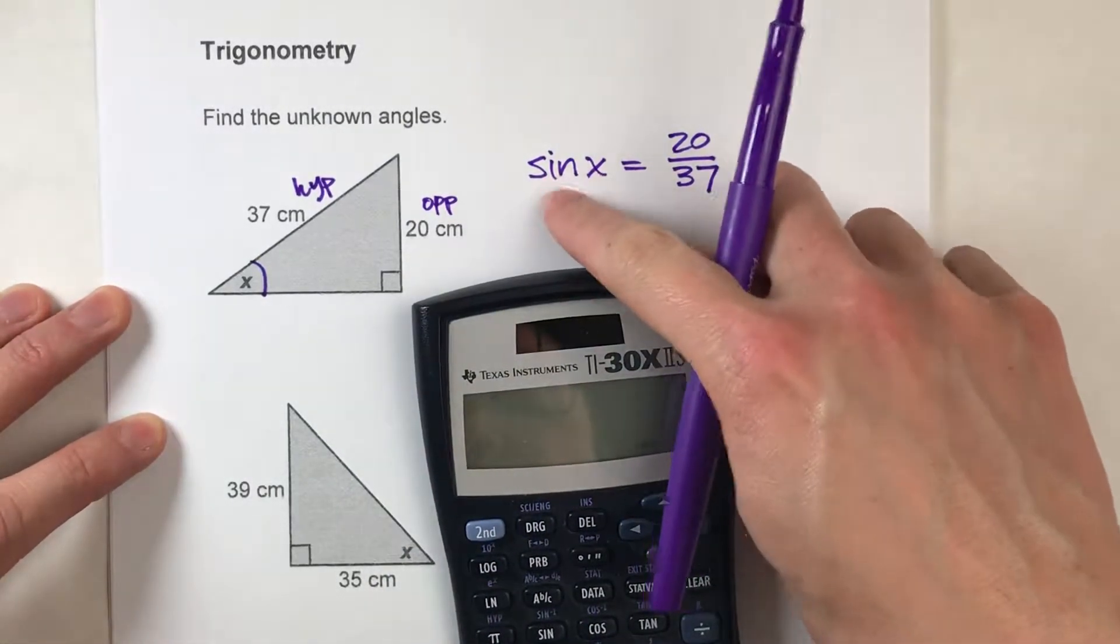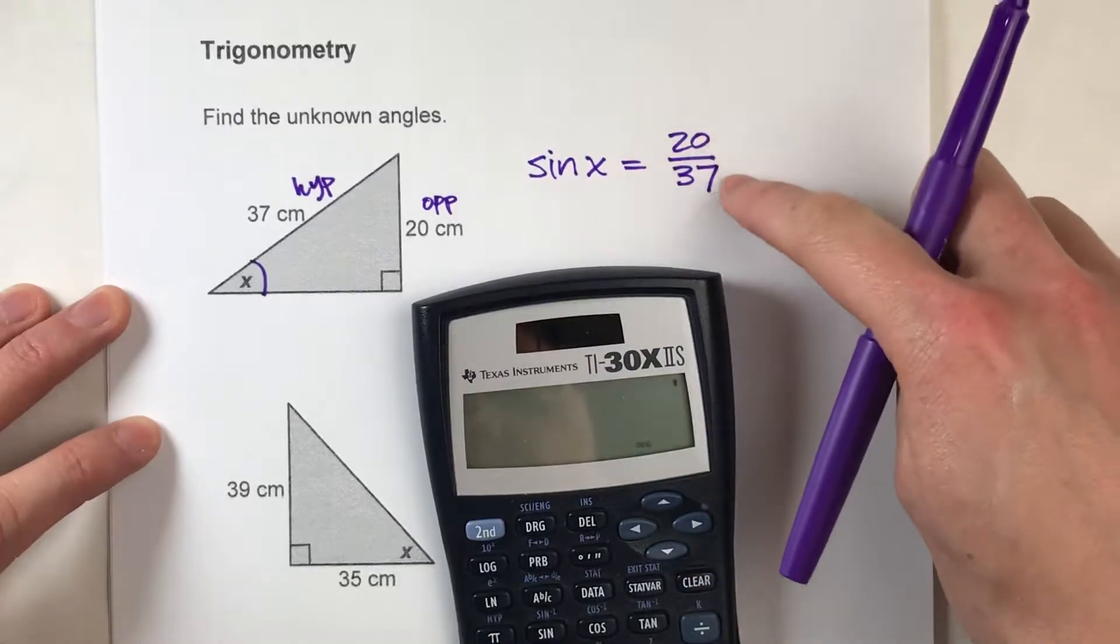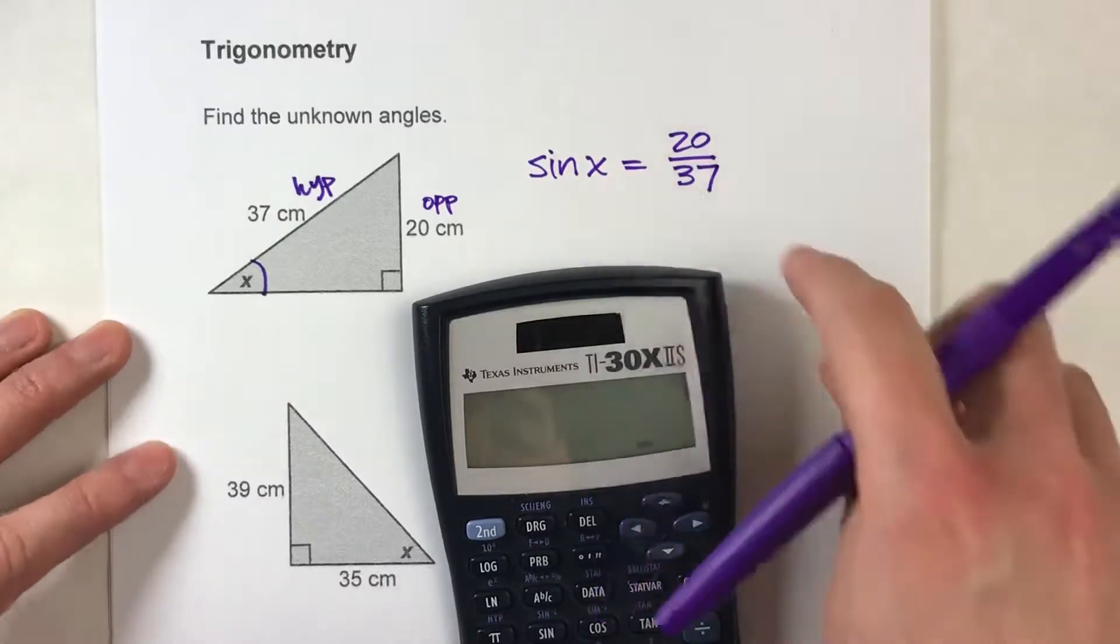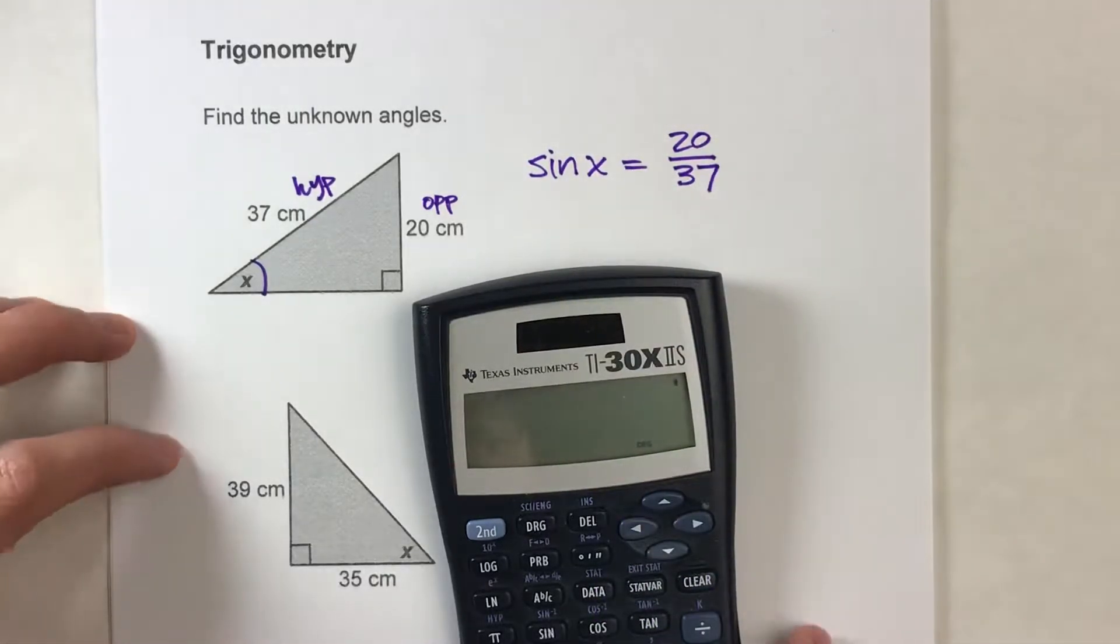We're trying to find the sine of some angle that equals 20 divided by 37. Now, you could just guess and check over and over again to find what the angle measure of x is, but there's actually a faster way.